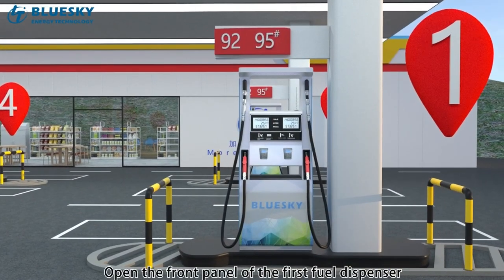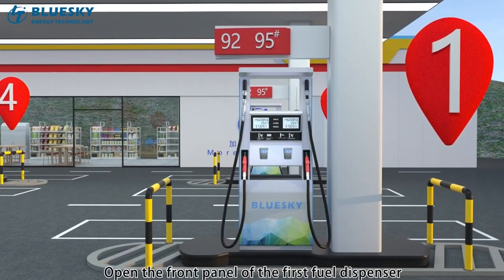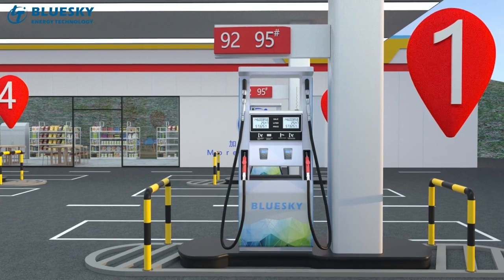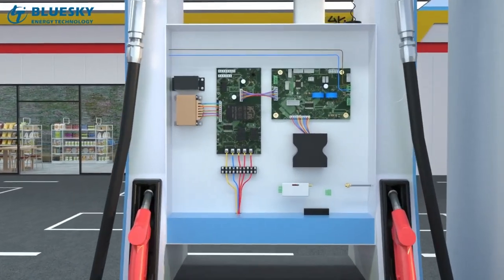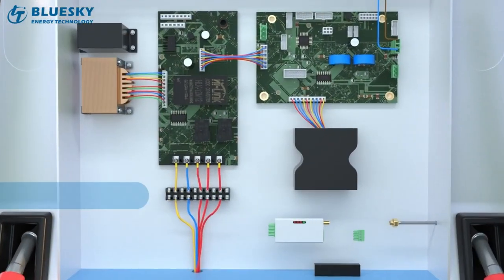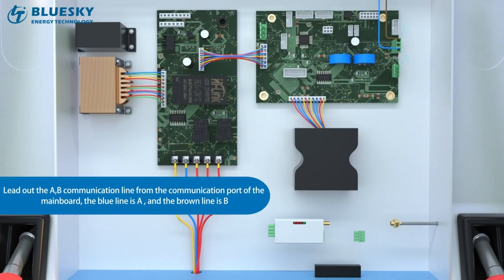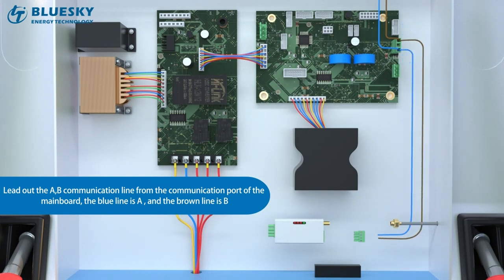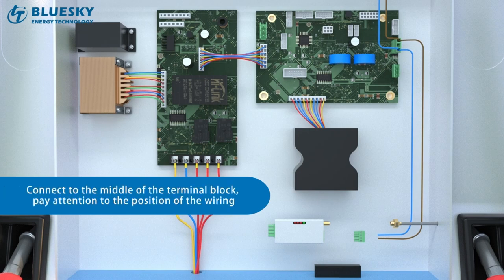Open the front panel of the first dual dispenser. Lead out the A communication line from the communication part of the main board. The blue line is A, and the ground line is B. Connect to the middle of the terminal block. Pay attention to the position of the wiring.